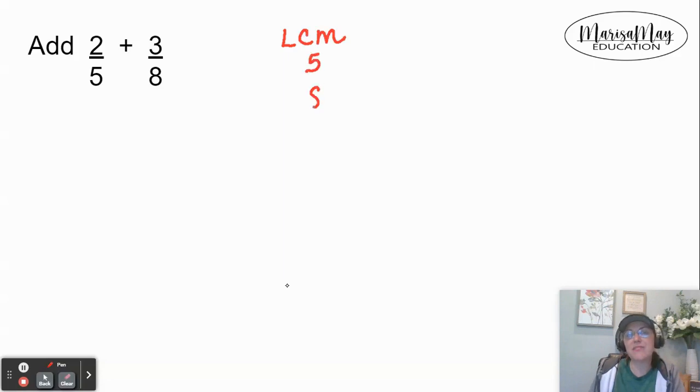I'm going to list out multiples of five and eight until I can get one that is the same. So we'll skip count by fives: five, 10, 15, 20, 25, 30. We've got to keep going until we get one that will be in the eight.